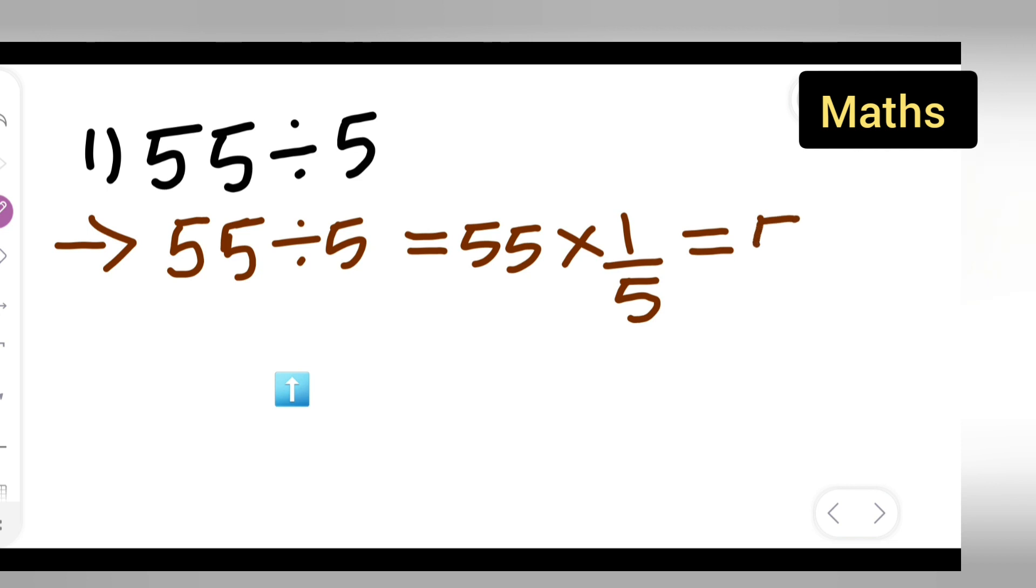So you'll have to do 55 upon 5. 5 ones are 5, 5 ones are 5, so your answer is 11.